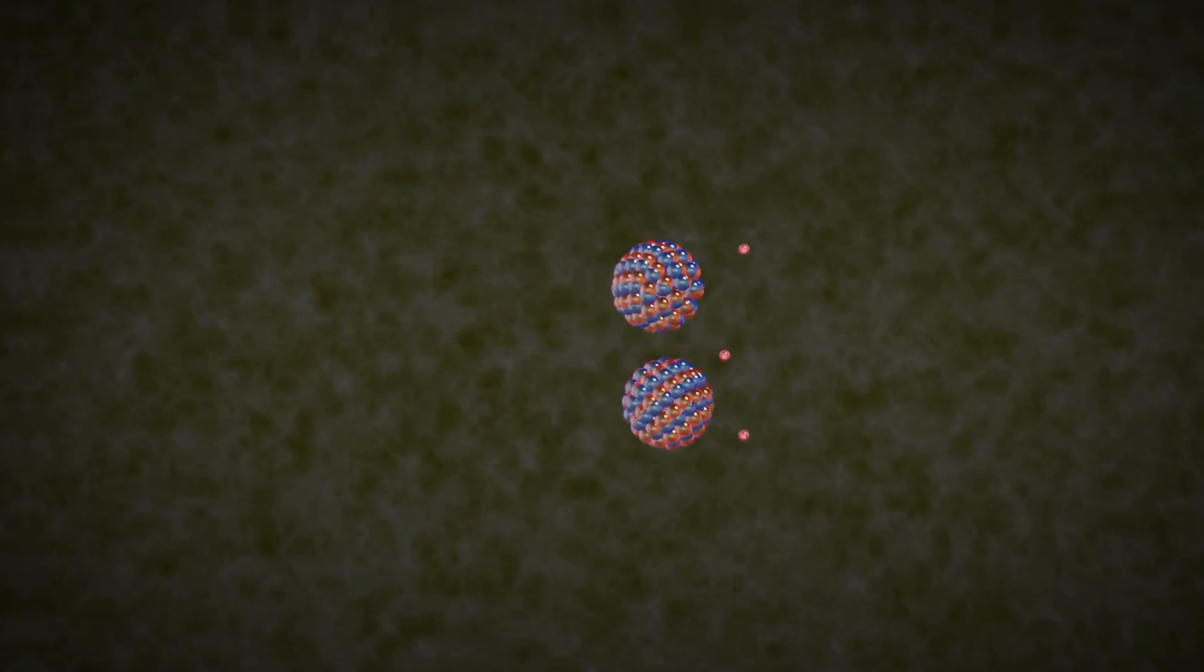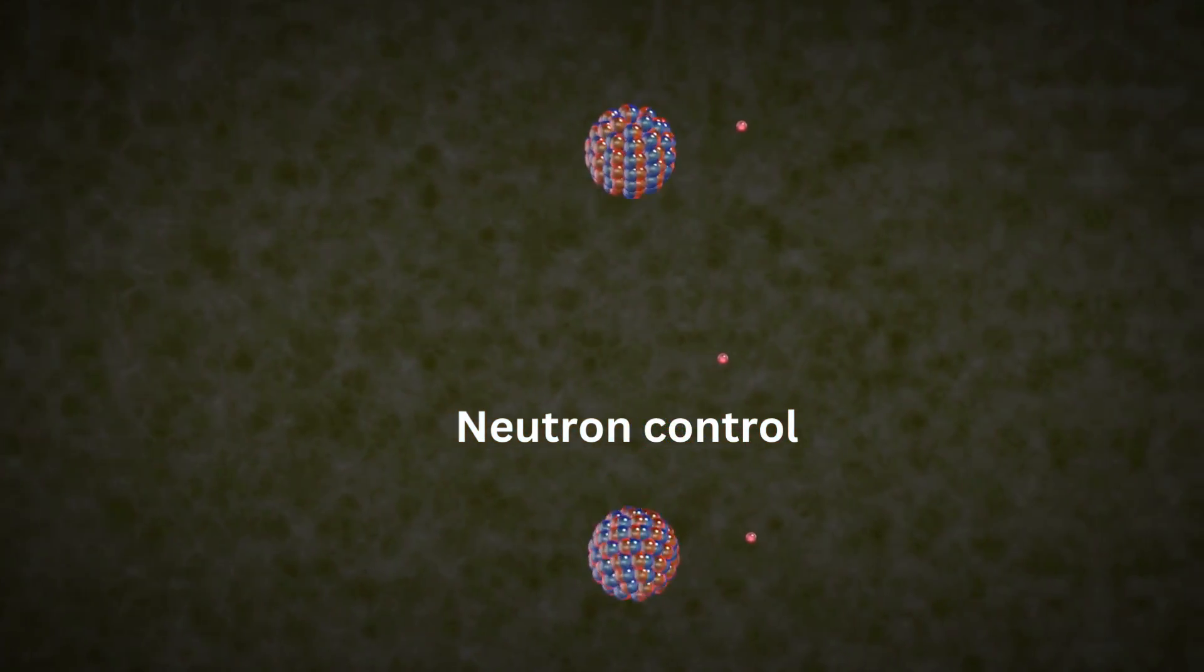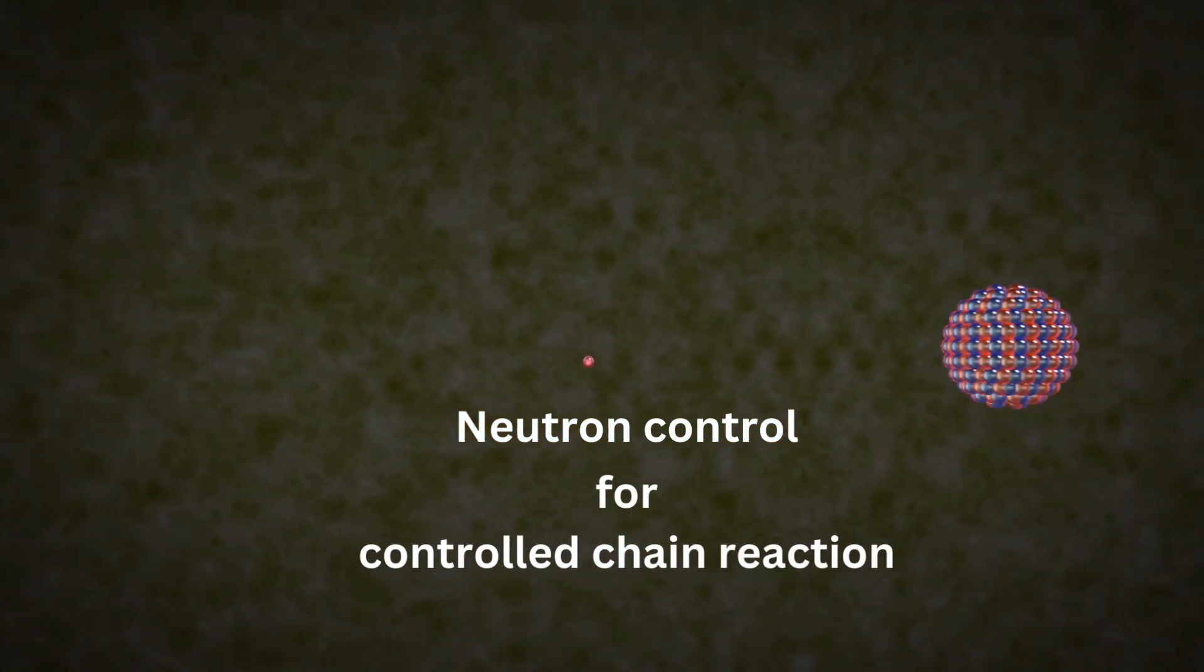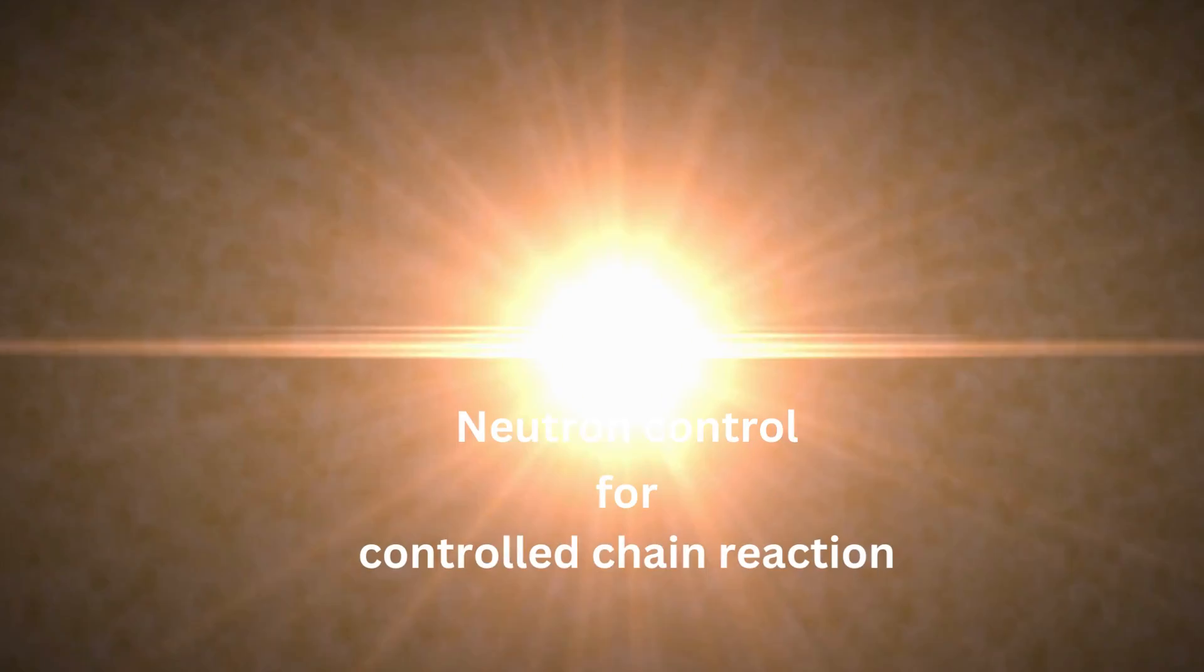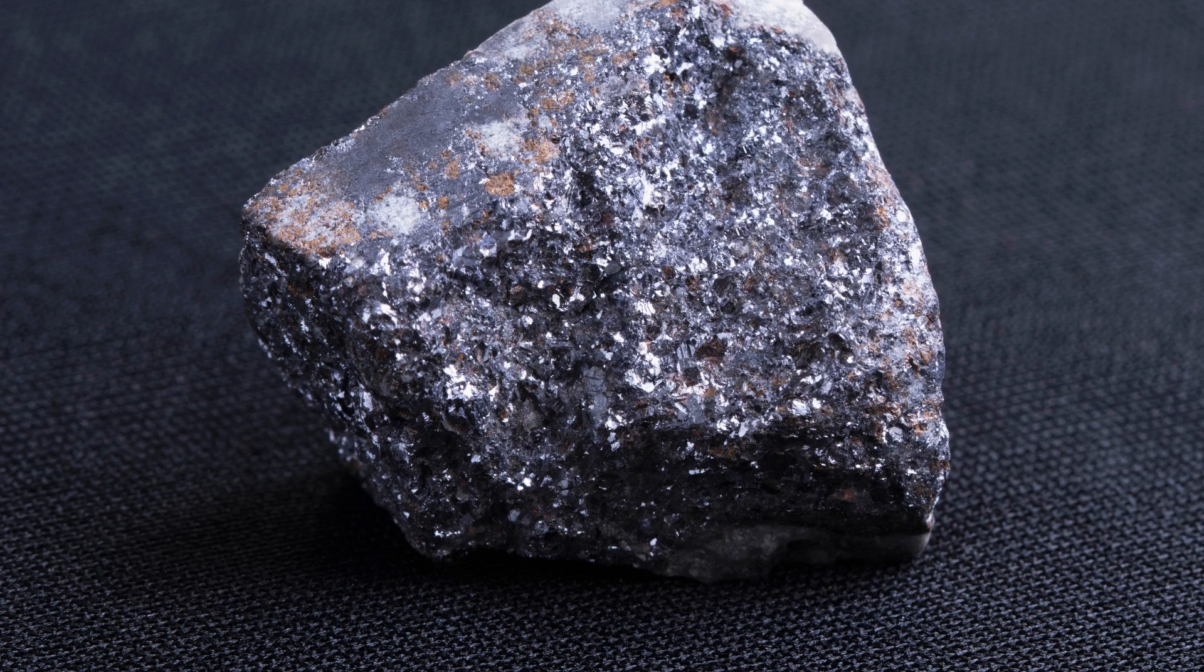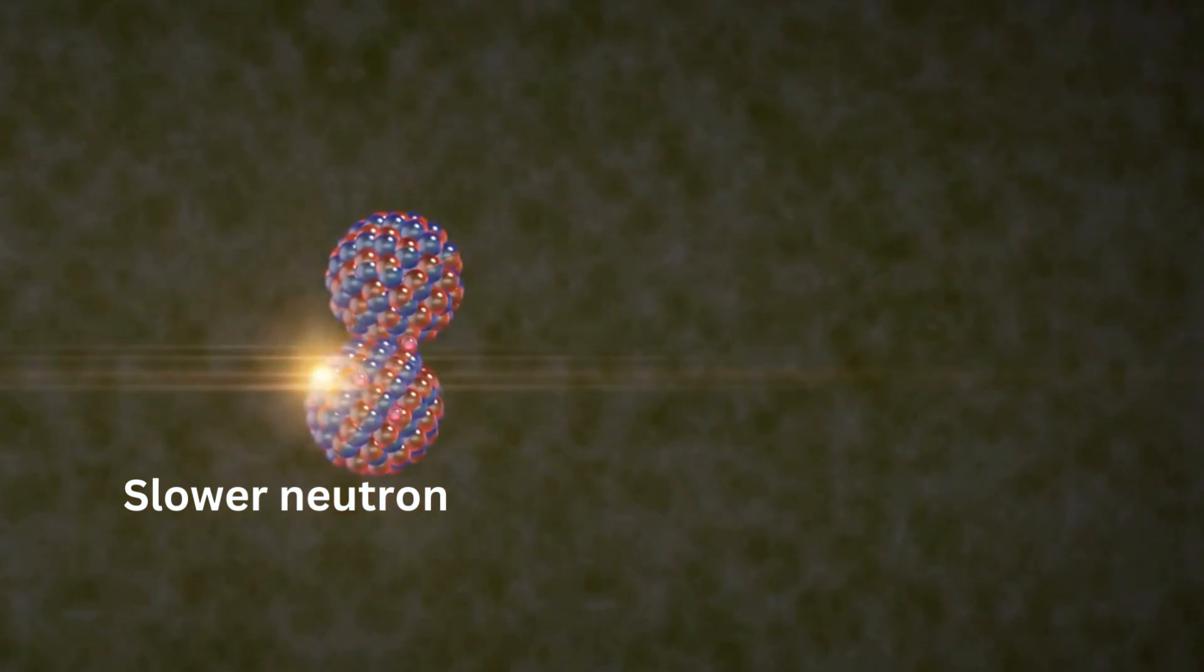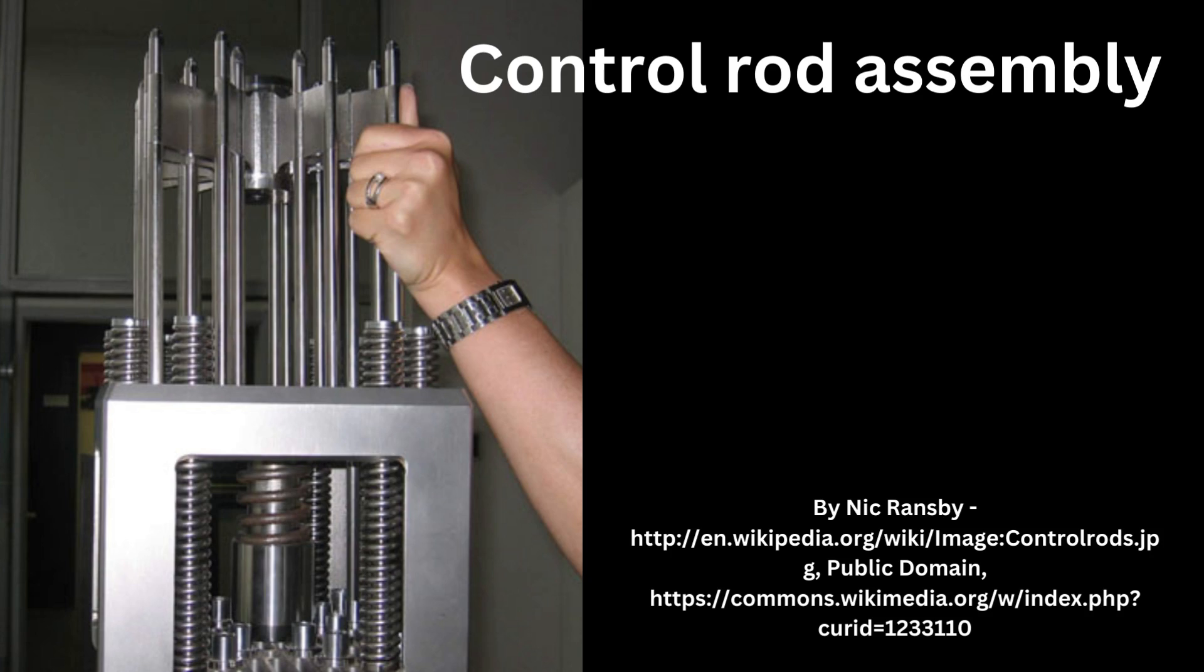It's crucial to control the quantity and energy of neutrons in order to maintain a controlled chain reaction. This is accomplished by utilizing moderators such as water or graphite, which slow the neutrons and increase their likelihood of causing fission. There is also usage of control rods which absorb extra neutrons.